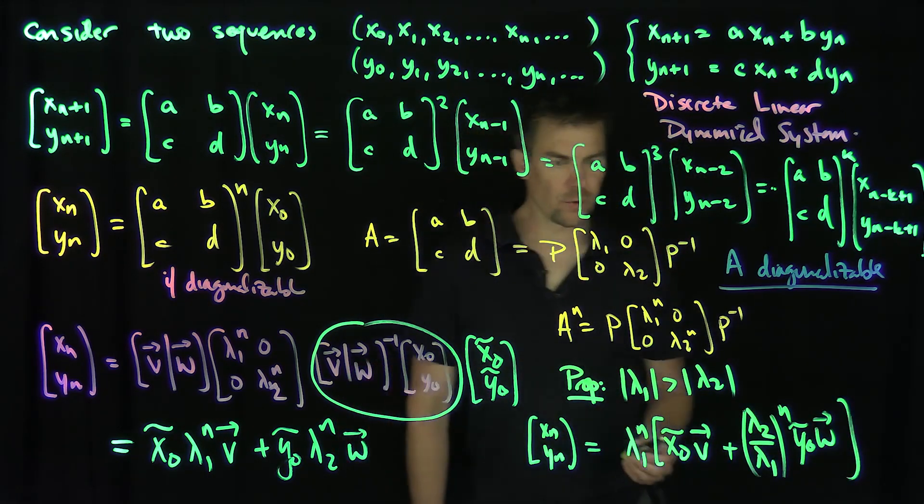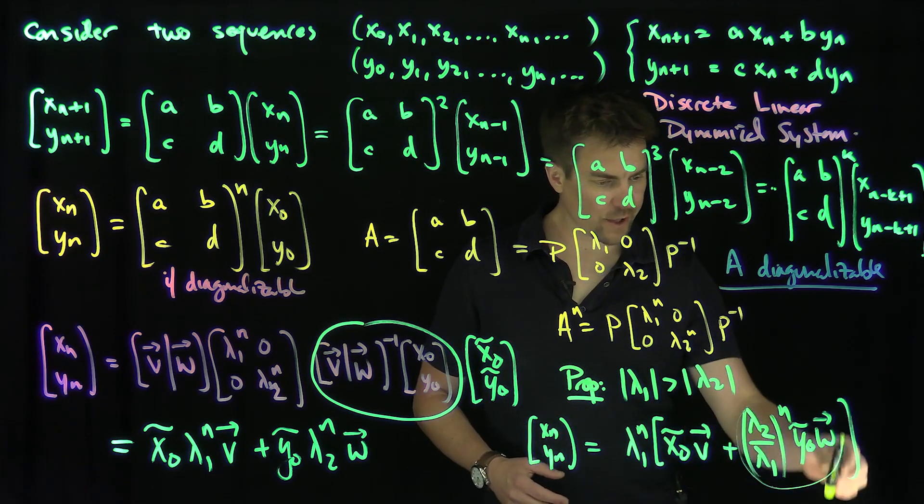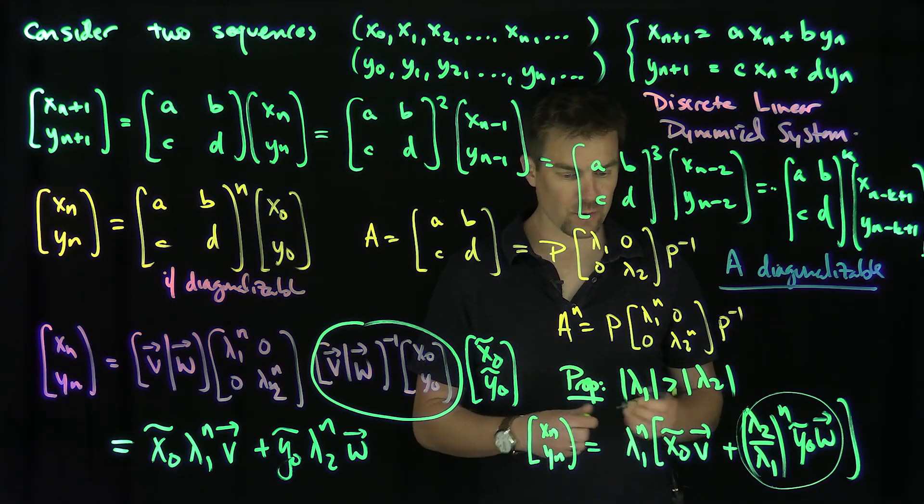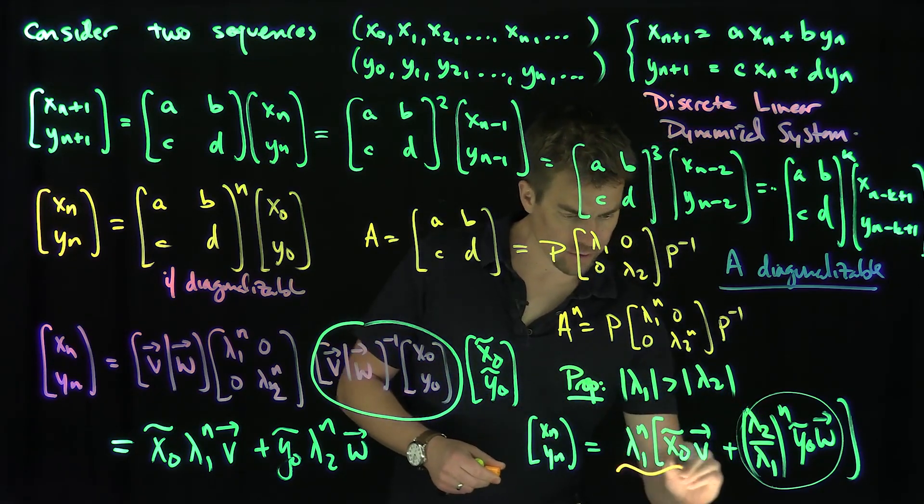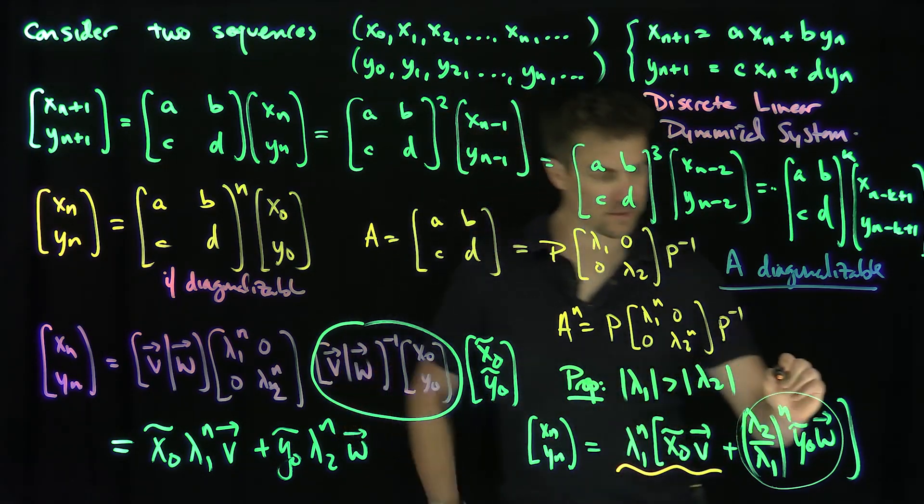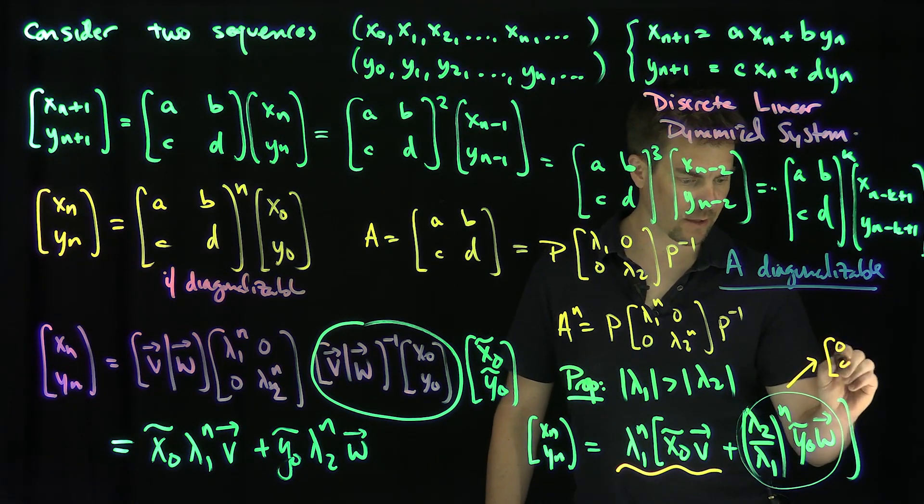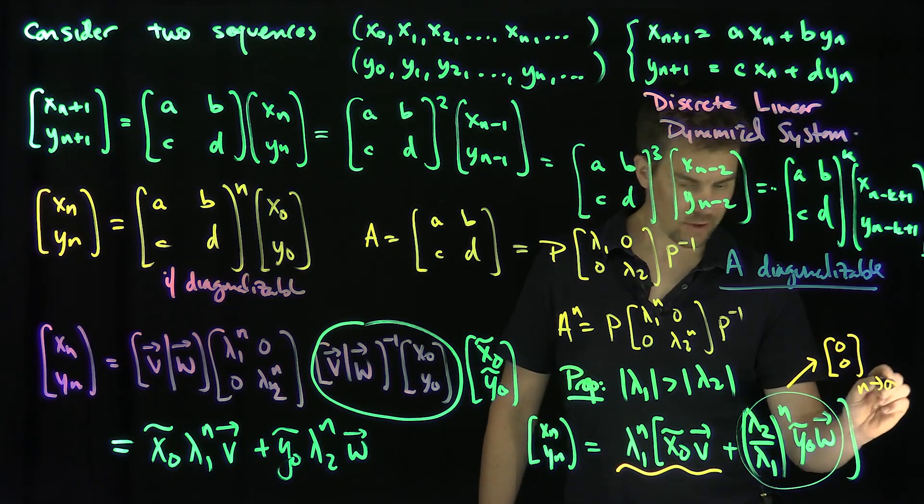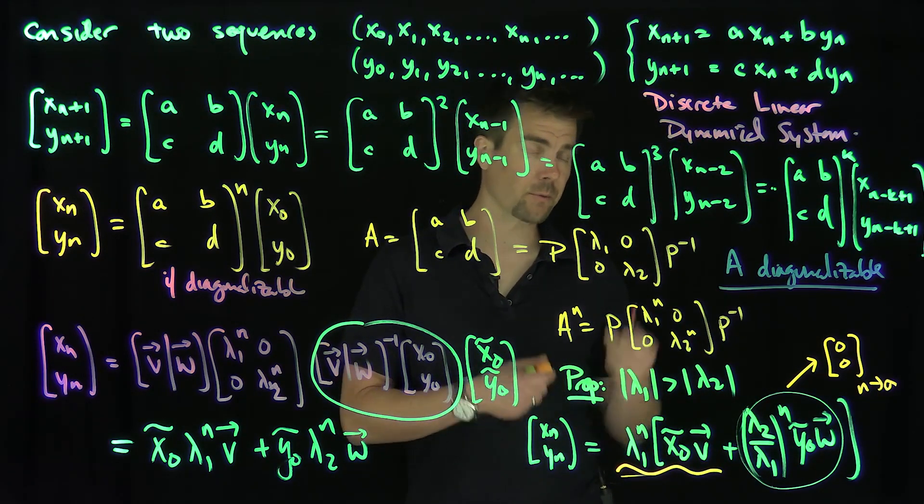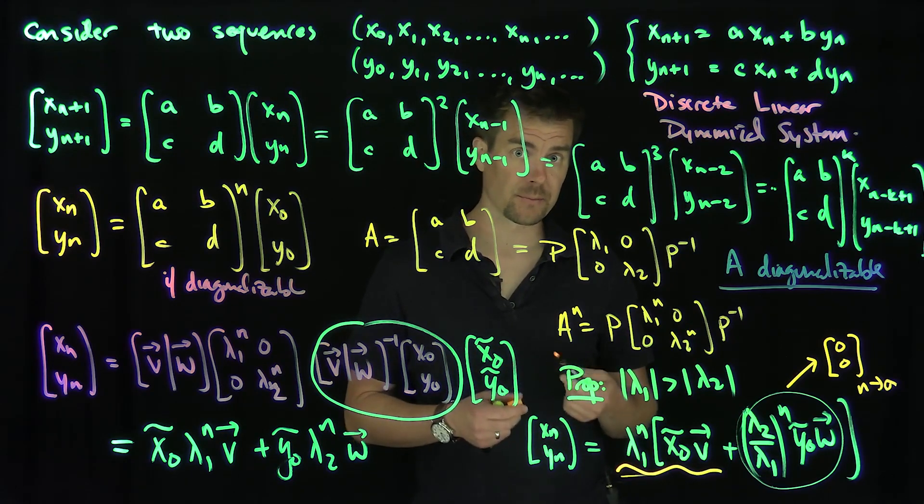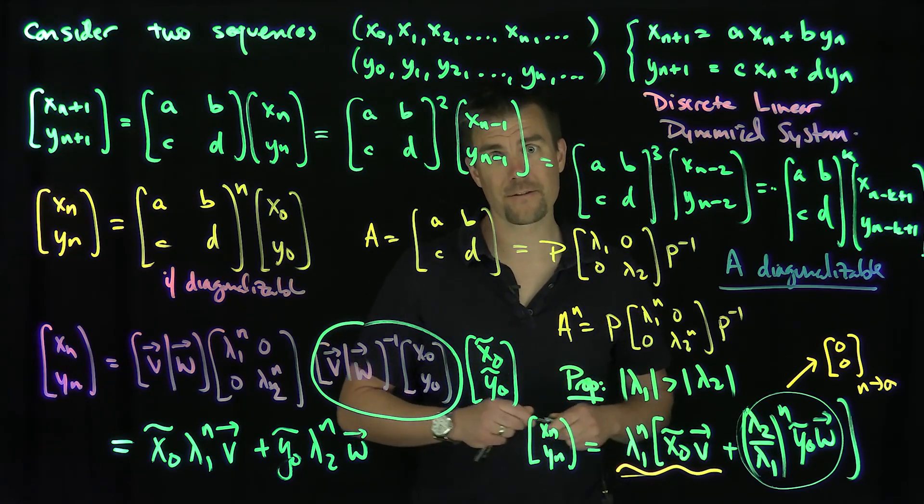Now what do we know about lambda 2 over lambda 1 in absolute value? These terms are approaching 0, so as n goes to infinity, these terms approach 0. So asymptotically, these terms are the terms that are prevailing as n goes to infinity. These are the asymptotically predominant terms in the discrete dynamical system. In further videos, we'll see examples of these discrete dynamical systems that correspond to the Fibonacci sequence and other predator-prey models. Thank you very much.